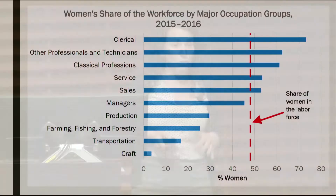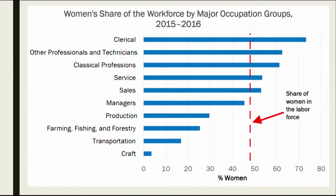This chart shows the percent of women in different occupational groups. Grouping occupations together, we can see there is wide variation — ranging from less than 4% of workers in crafts being women, to 73% in clerical occupations.